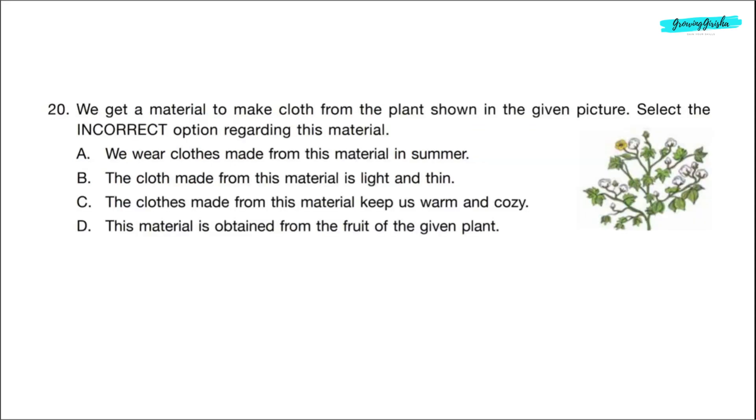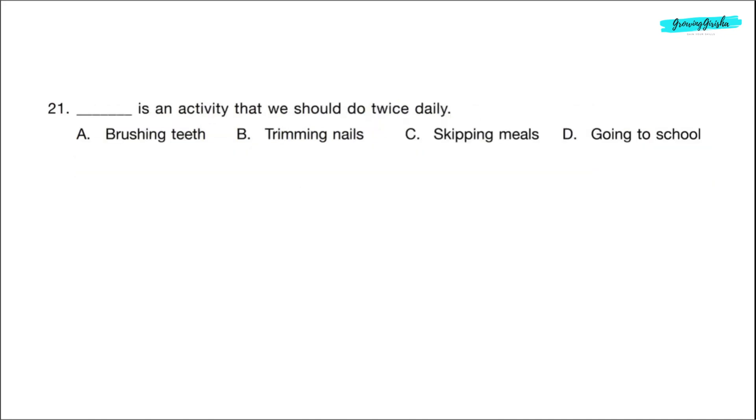Question 20. We get a material to make cloth from the plant shown in the given picture. Select the incorrect option regarding this material. The given picture is of a cotton plant. Option A, we wear clothes made from this material in summer. This is correct. Option B, the cloth made from this material is light and thin. This is correct. Option C, the clothes made from this material keep us warm and cozy. This is incorrect. Correct answer is option C. Question 21. Dash is an activity that we should do twice daily. Correct answer is option A. Brushing teeth.